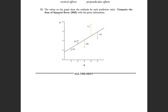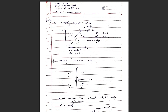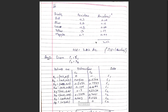Now we move to the last problem. In this problem, the values on the graph show the residual for each prediction value — that is, the deviation is given to us. We are asked to compute the sum of squared error. The deviations given are: minus 0.2, minus 0.4, minus 0.8, and the other two are 1.3 and 0.7.